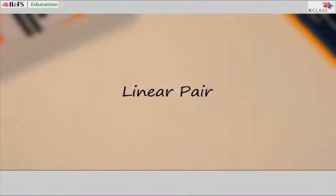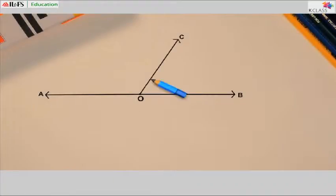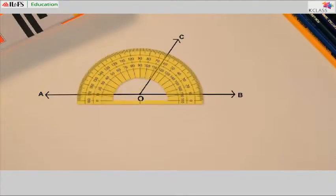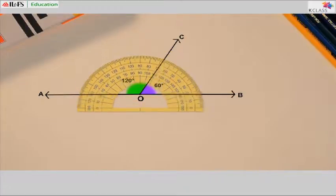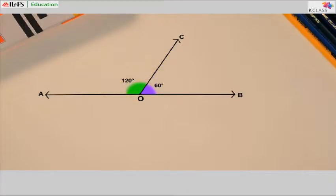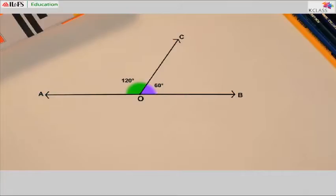Linear Pair. See this figure. Angle AOC and angle COB are adjacent angles. Let's measure these: AOC measures 120 degrees and COB measures 60 degrees. So we have two adjacent angles that are also supplementary. They share a common vertex O and a common side OC. These two angles form what we call a linear pair.